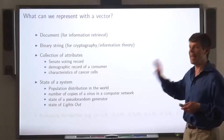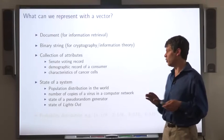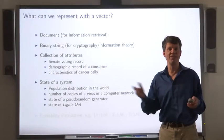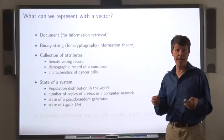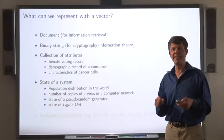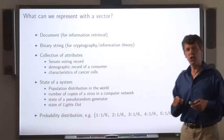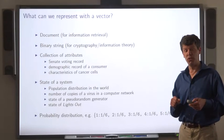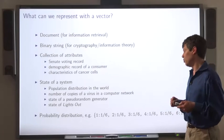We can also use it to represent the state of a system. For example, the population of different countries in the world or the number of copies of a virus in a computer network, the state of a pseudo-random number generator, or the state of a game called lights out. We can also use it to represent a probability distribution, which is after all a mapping from some set to the real numbers.